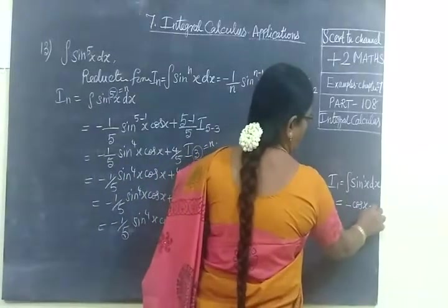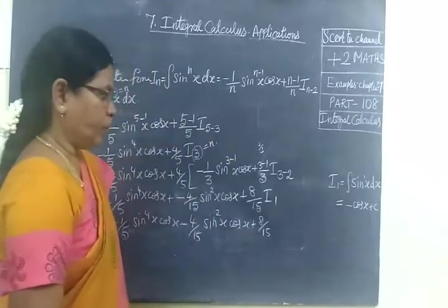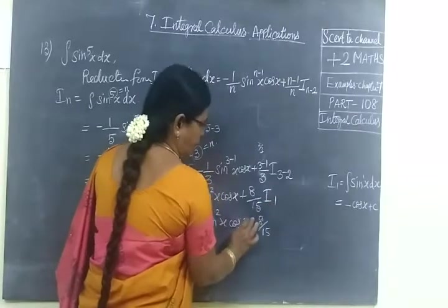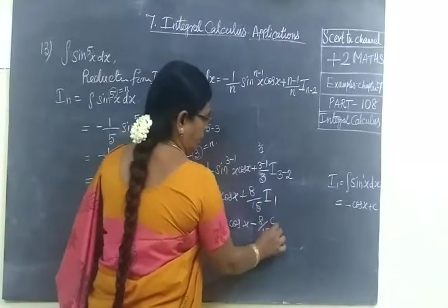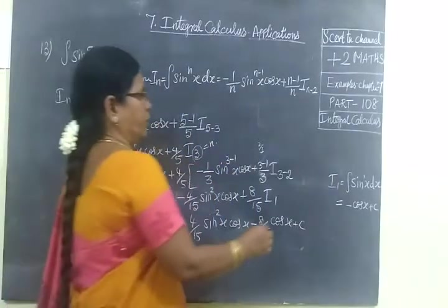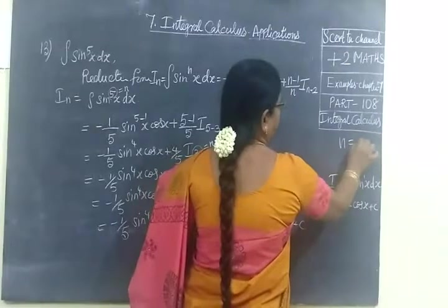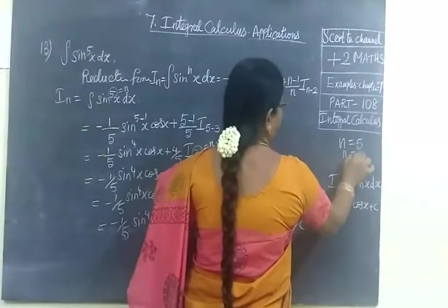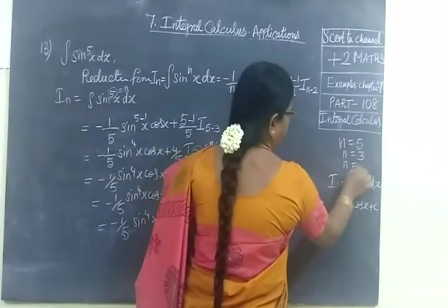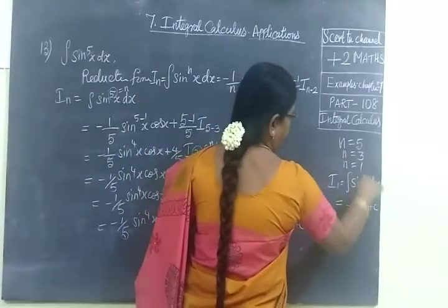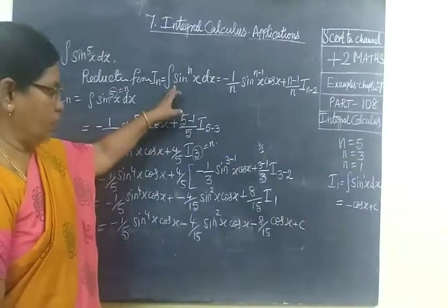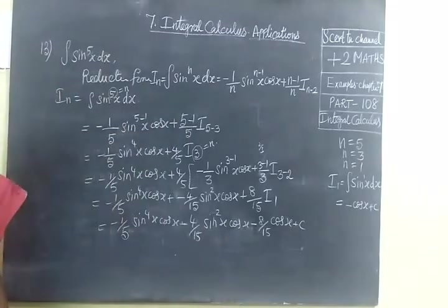So minus cos x plus c. First, n is 5. After the reduction, n equal to 3. Then still, we reduce n equal to 1. So using the reduction formula, we do this problem.